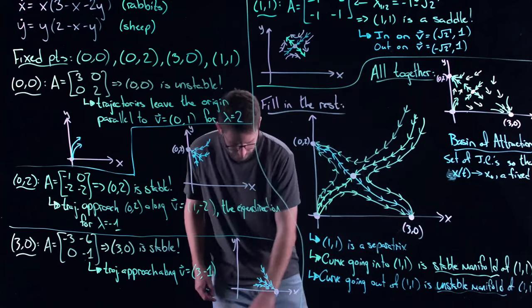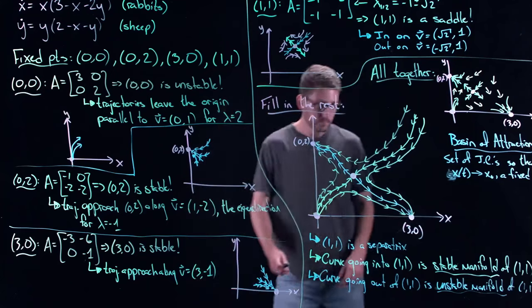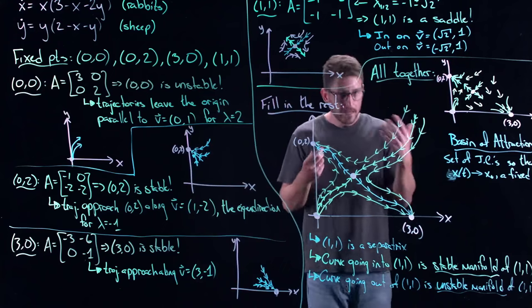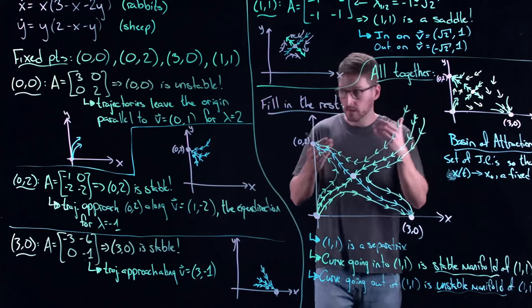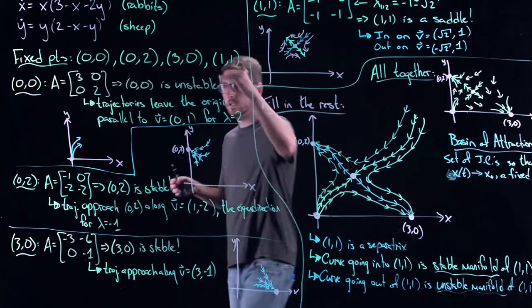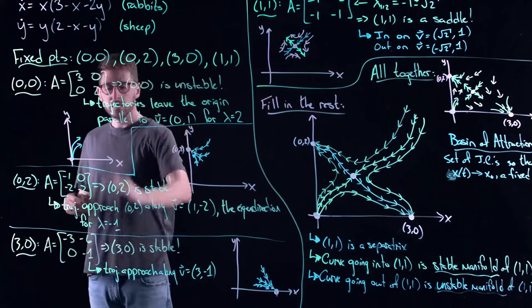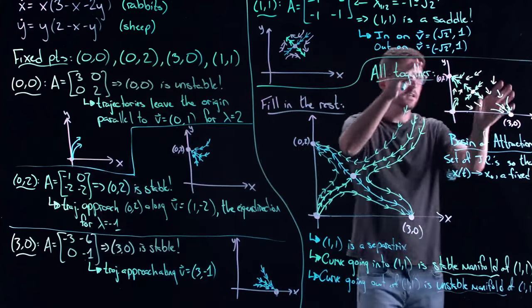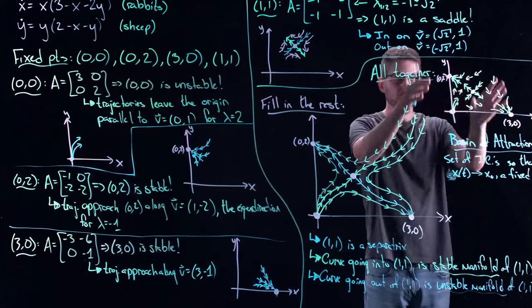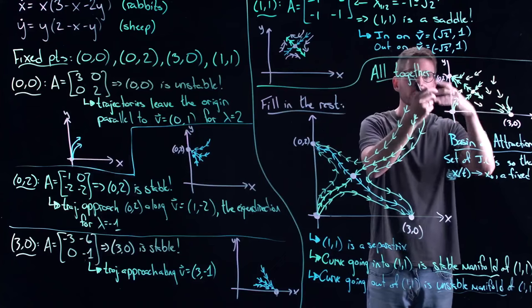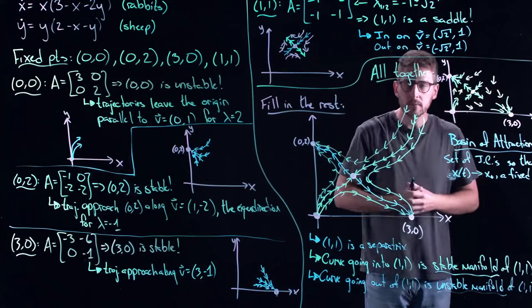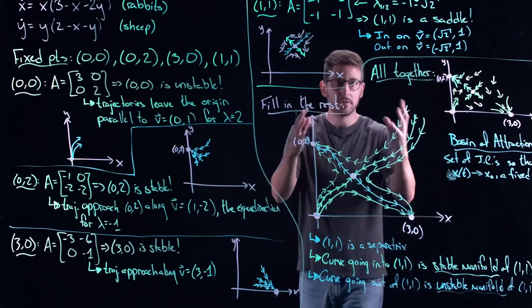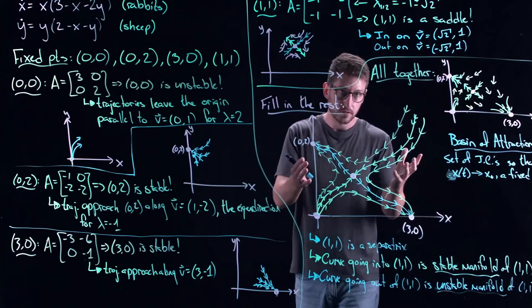The basin of attraction for (3, 0) is everything underneath the stable manifold of (1, 1). The basin of attraction for (0, 2) is everything above it. The basin of attraction for (1, 1) is everything exactly on the stable manifold. The basin of attraction for (0, 0) is just (0, 0) itself — it's unstable, so the only way you ever go there is if you started there.